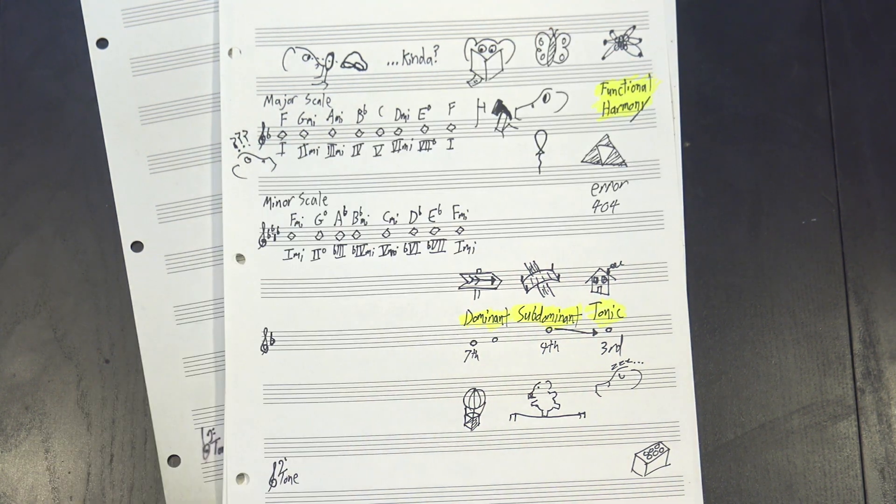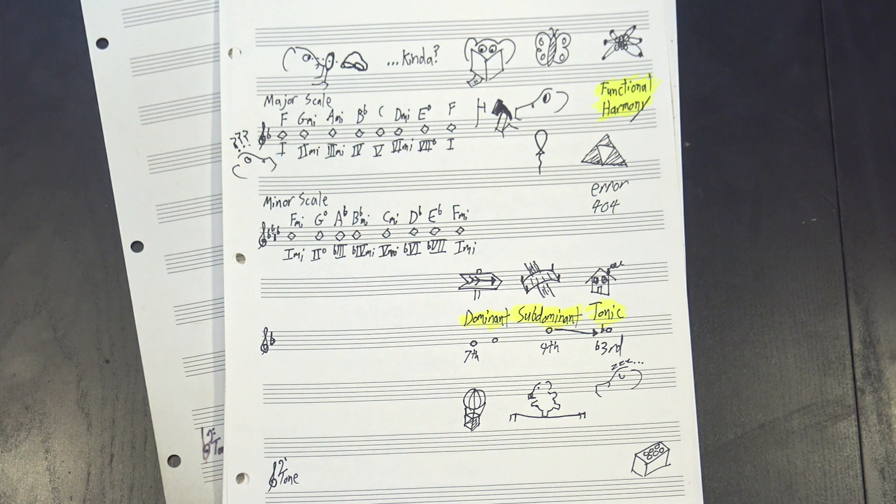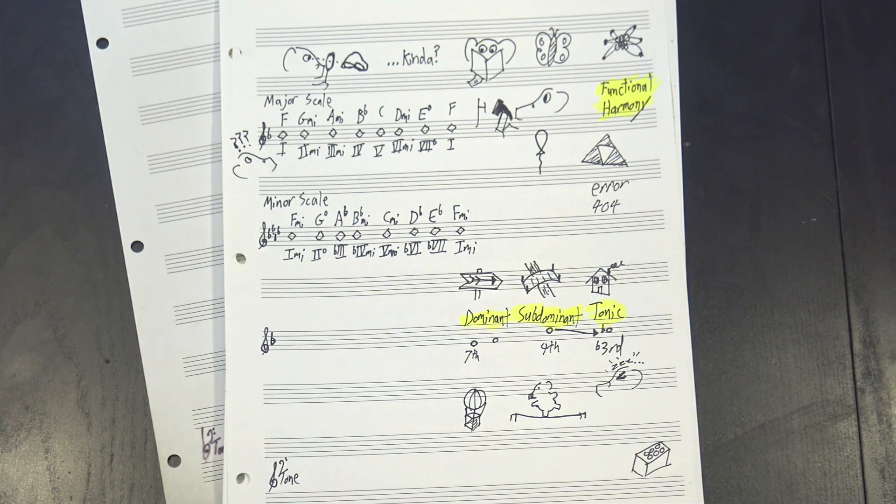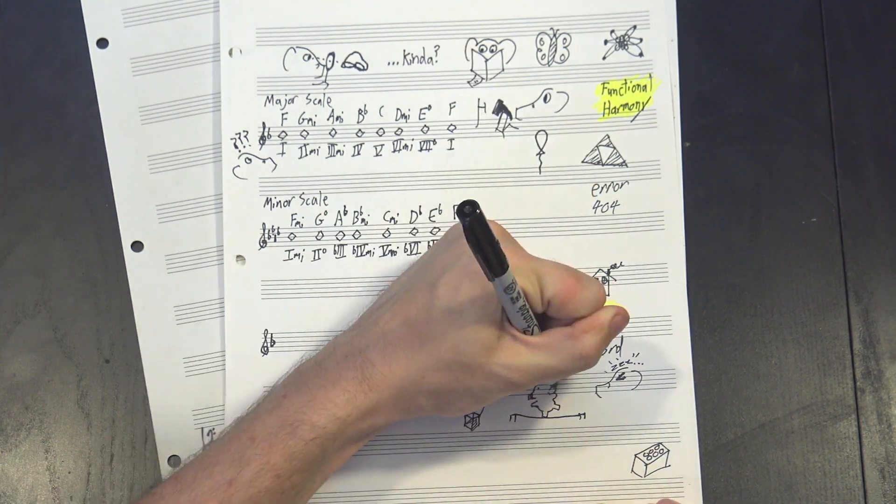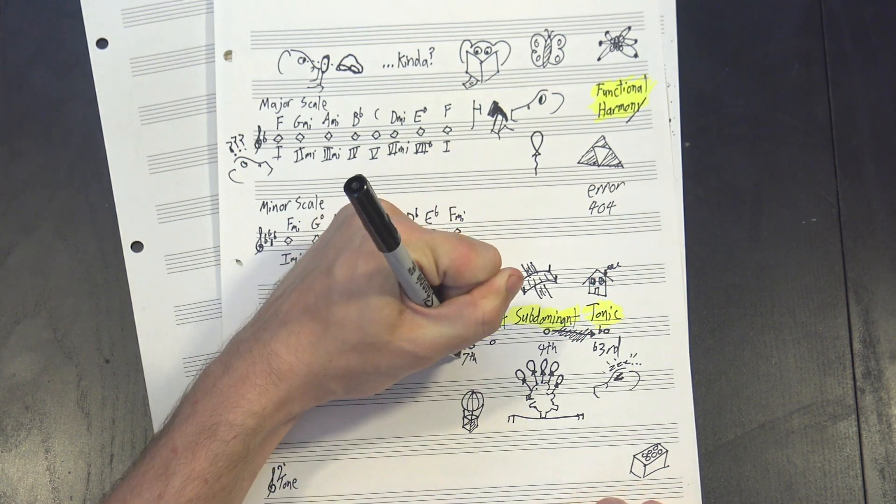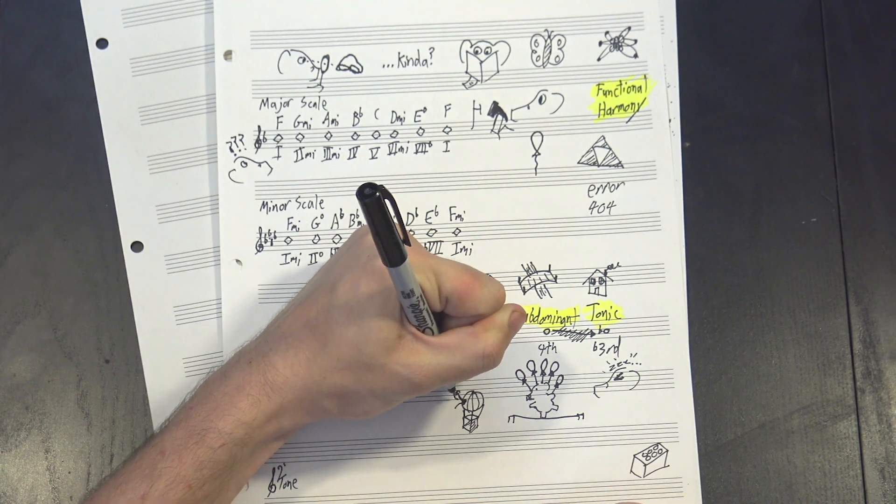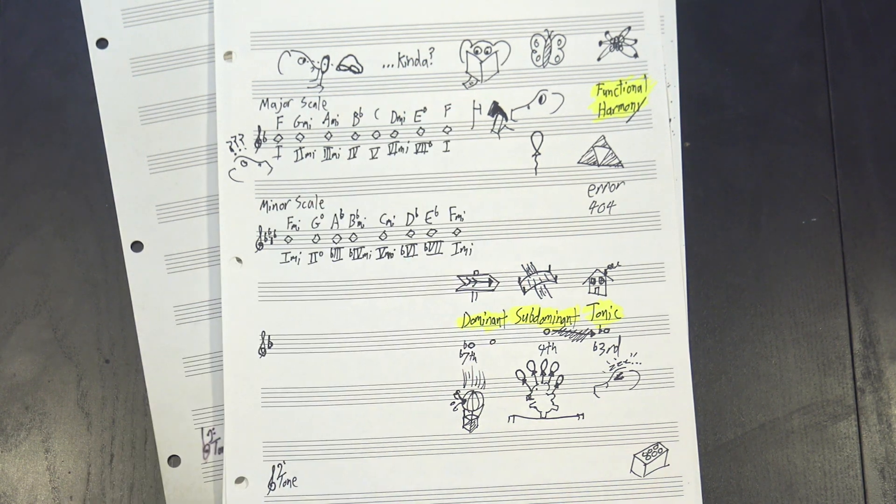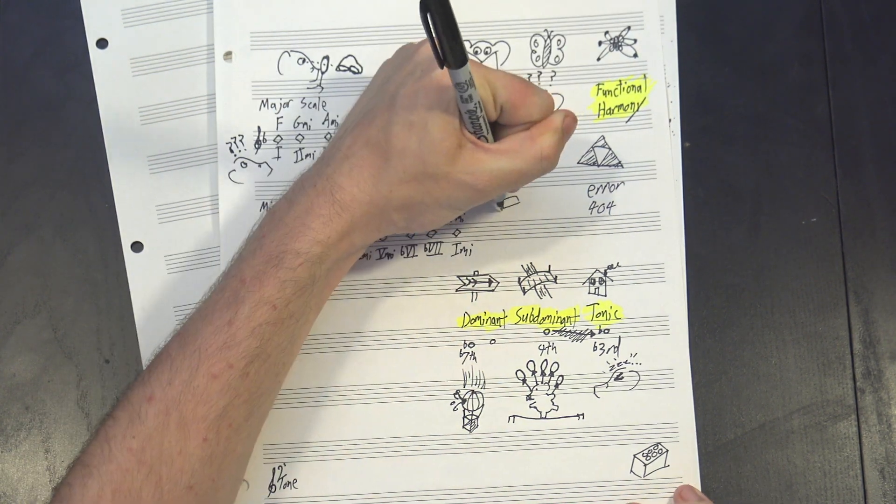But in minor, those don't work so well. The 3rd degree is lowered, making it less consonant and less capable of providing rest. This also pulls it further away from the 4th, so we don't get the same instability that we'd expect from that note. And in minor, the 7th degree is flat, so we don't have that leading tone quality we need in order to get dominant function. So chord functions don't work, right? Well, no.